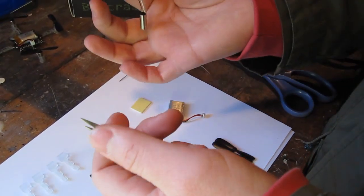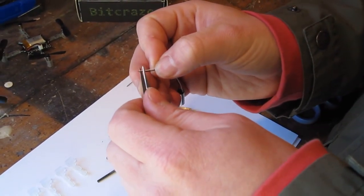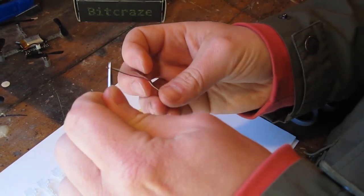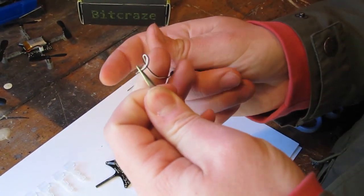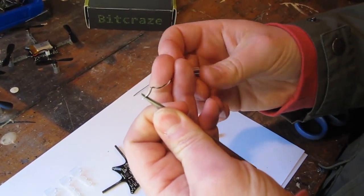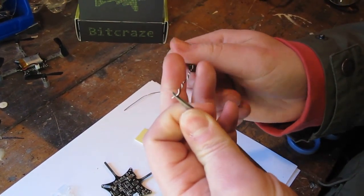So to twist the wires you take the tweezers at the end and then you can twist the motor around, twist the wires like this.